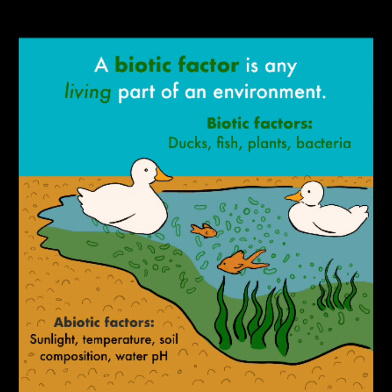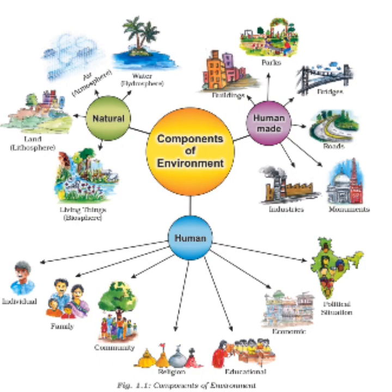We are going to study about the components of environment. In our surroundings, so many things are there — water, land, buildings, bridges, our family members, our friends. These are part of our environment. We can divide these elements into three headings: natural components, human-made components, and human components.